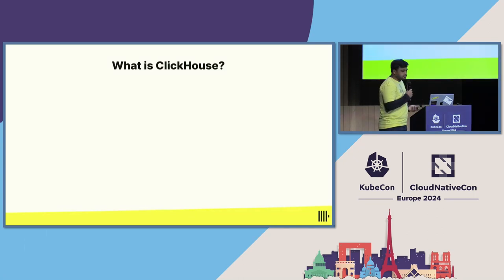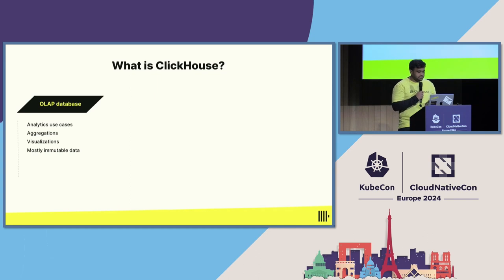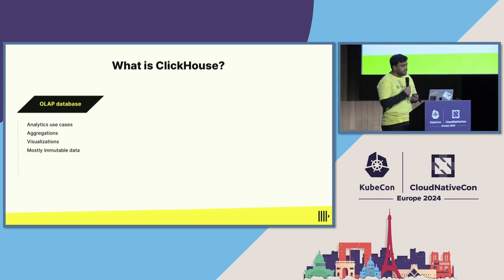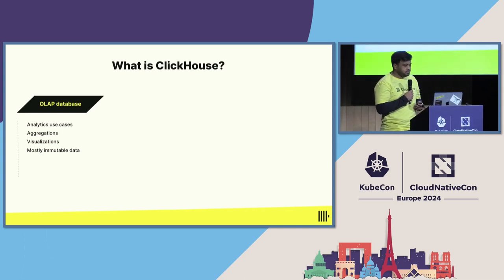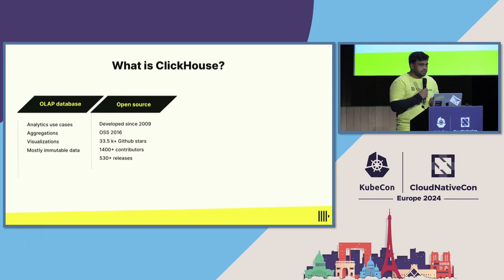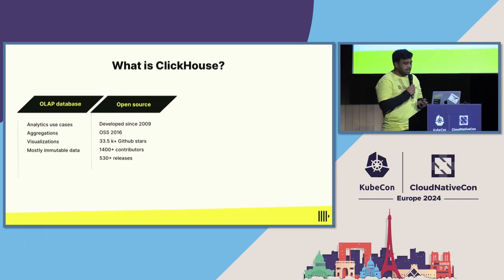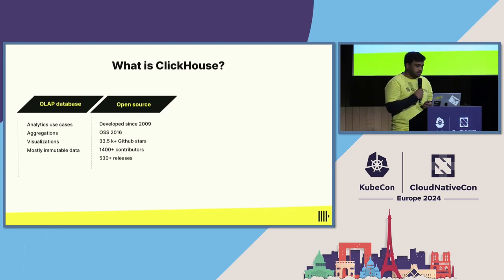So what is ClickHouse? ClickHouse is an OLAP database. It's used mainly for analytics use cases — to generate aggregations and visualizations on your data. It works best with mostly immutable data. It's been in development since 2009, was open sourced in 2016, and has gained a lot of popularity since then. It's one of the fastest growing GitHub communities.